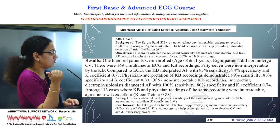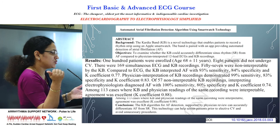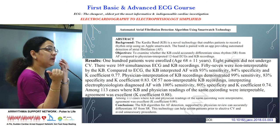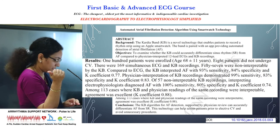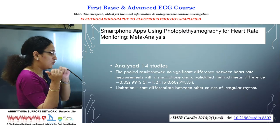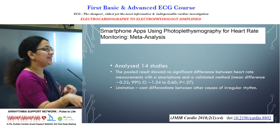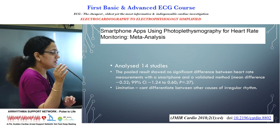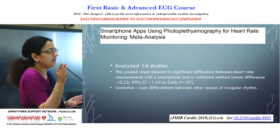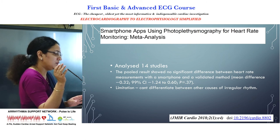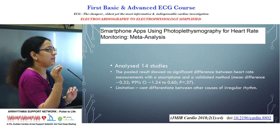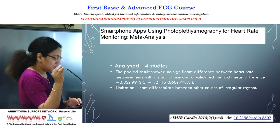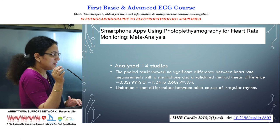A recent 2018 article also showed that automated AF detection by smartwatch technology has good sensitivity and specificity. Regarding photo plethysmography, a pooled data analysis of 14 studies showed it can measure heart rate, but cannot determine the type of arrhythmia present. Further studies for photo plethysmography are still needed.